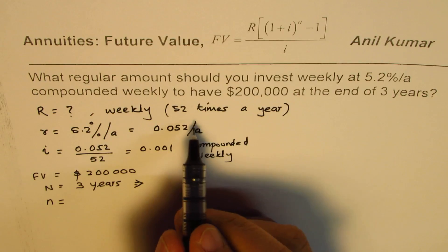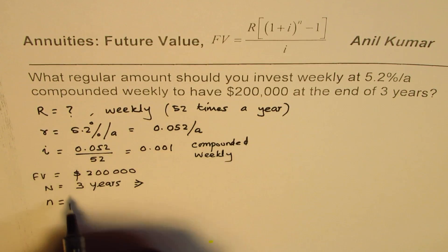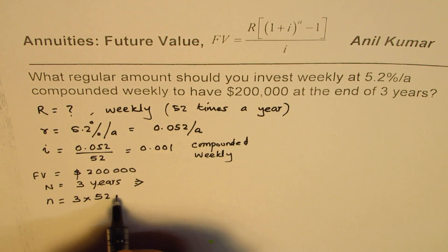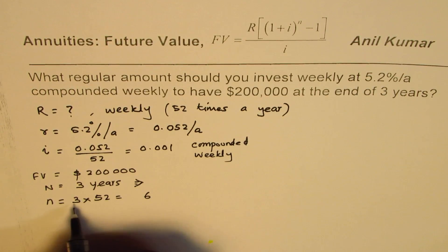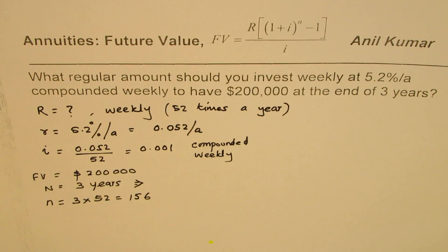N equals to, since it is compounded 52 times, so it will be 3 times 52. So that is 3 times 5 is 15, so N is 156 for you, correct? So that is how you get all this.